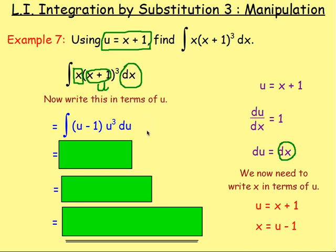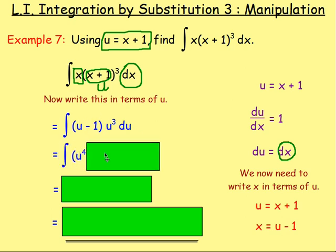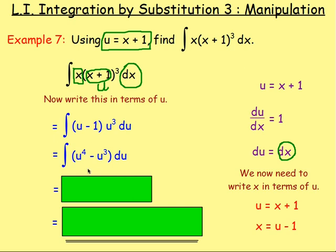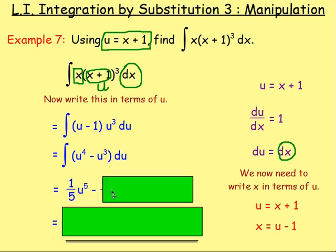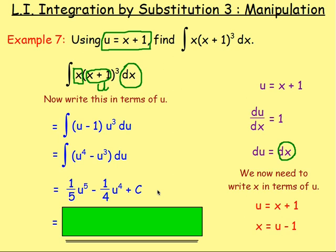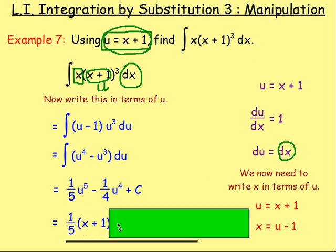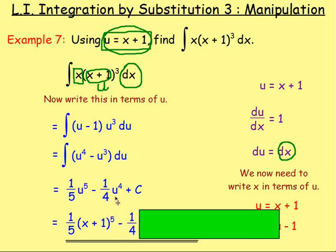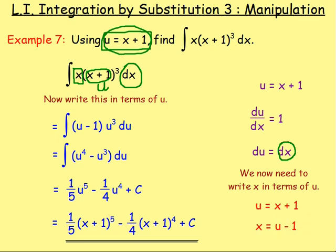From there we want to integrate by multiplying out the bracket. u times u cubed will be u to the power of 4; negative 1 times u cubed will be take away u cubed; and on the end we've still got du. Then we integrate: u to the power of 4 becomes u to the power of 5 divided by 5; take away u to the power of 3 integrated goes to u to the power of 4 over 4; plus c. That is our answer in terms of u. We swap u with x plus 1, giving us one fifth of x plus 1 to the power of 5, take away one quarter of x plus 1 to the power of 4, plus c. That's example 7.